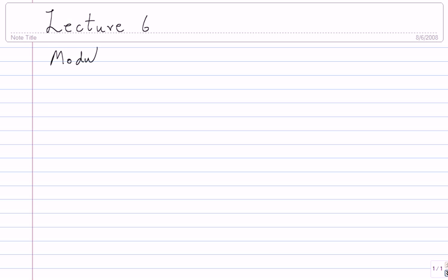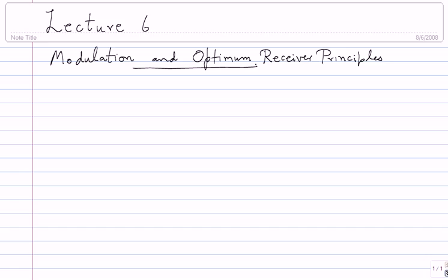The general title for the next few lectures can be called modulation and optimum receiver principles. This is the very basics and you should make sure you spend a lot of time with this. We'll begin by looking at modulation closely and try to understand it in a compact, succinct form, and see what it tells about receiver principles and how you go about designing a receiver.